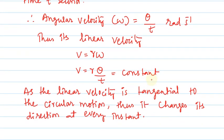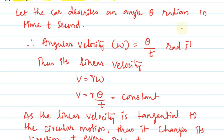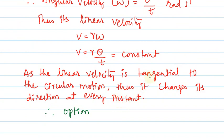Therefore, option B is correct. Magnitude of velocity is constant but direction changes. Option B is correct.